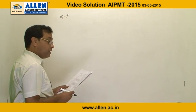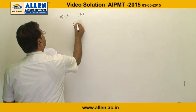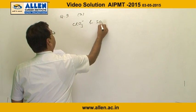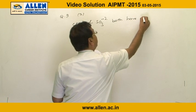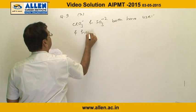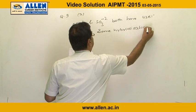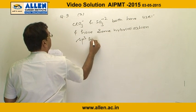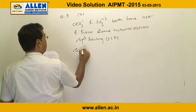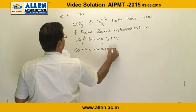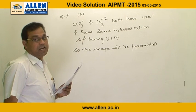Question number 9: Which of the following pair of ions are isoelectronic and iso-structural? The correct answer is option 3: ClO₃⁻ and SO₃²⁻. Both have 42 electrons and the same sp³ hybridization with one lone pair, giving a pyramidal shape — so both are isoelectronic and iso-structural.